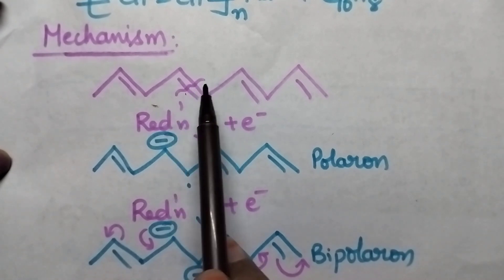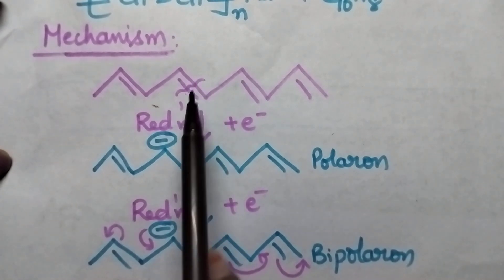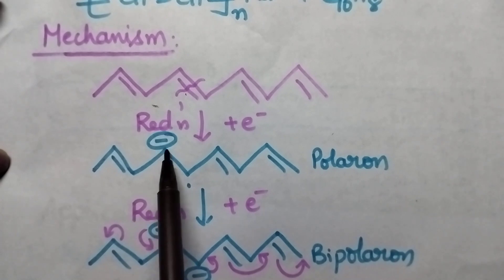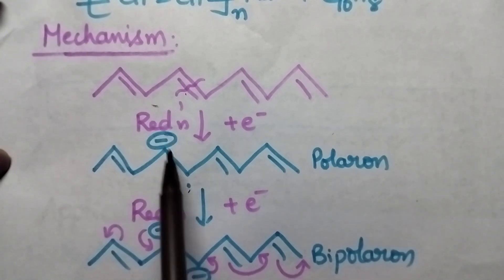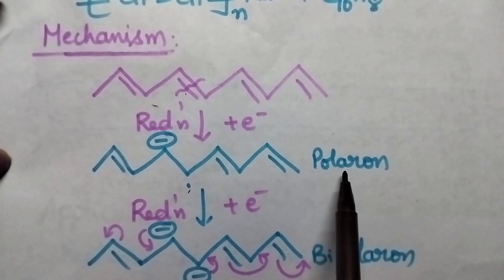One of the double bonds undergoes cleavage and electron will be added. Let us suppose that this carbon atom undergoes reduction, that means extra electron will be present. It results in the formation of ion radical. This can be called as polaron.